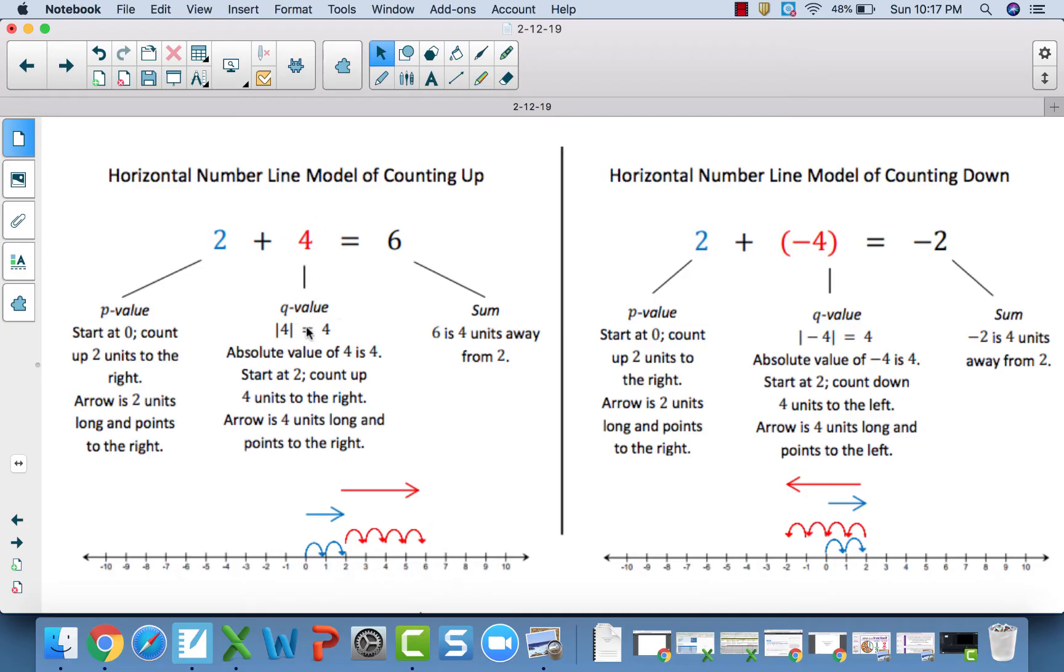So P, we're starting at 0, and we would count 2 to the right. The arrow would be 2 units long and point to the right. The absolute value of this second add-in of 4 is 4. So starting at 2, you would count up 4 units to the right, which we see here. Now the sum or the answer is 6. 6 is 4 units away from 2. Now if I look here, similar question except the second add-in is negative. And our sum therefore becomes negative 2. Negative 2 is 4 units away from 2. The 4 units comes from the absolute value of negative 4. So the sum is always the second add-in's absolute value's distance from the first one.